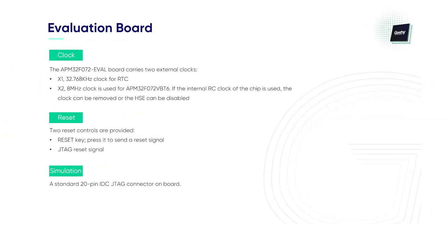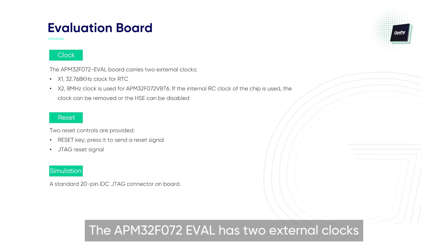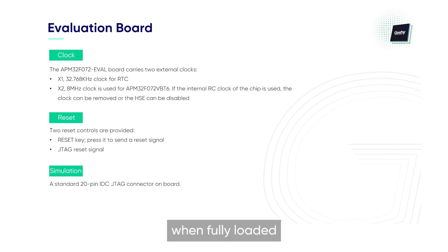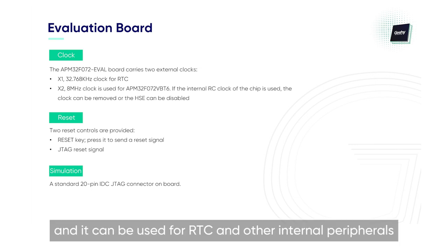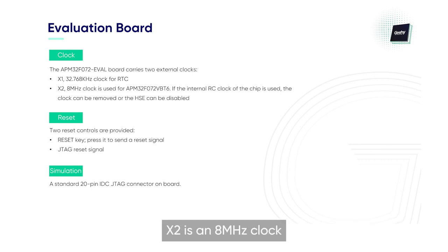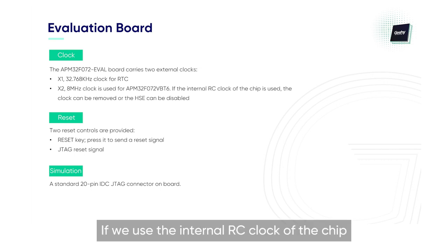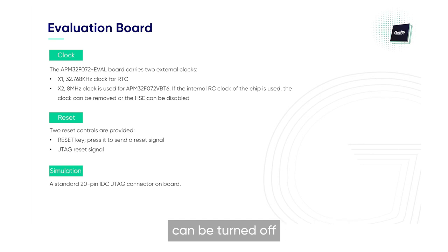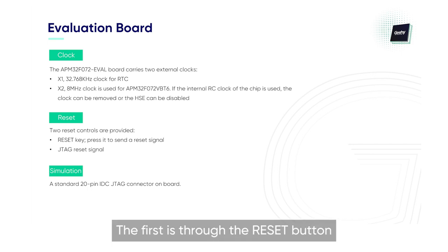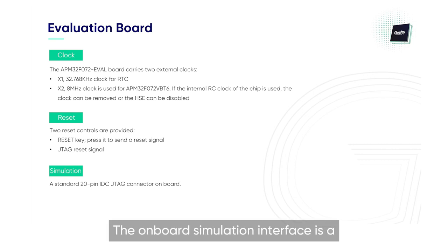Next is the clock. The APM32F072EVAL has two external clocks when fully loaded. X1 is a 32.768 kHz clock, which can be used for RTC and other internal peripherals. X2 is an 8 MHz clock. If we use the internal RC clock of the chip, this clock can be removed or the HSE enable can be turned off. Two reset signals are provided: through the reset button, and the JTAG reset signal. The onboard simulation interface is a standard 20-pin IDC JTAG connector.